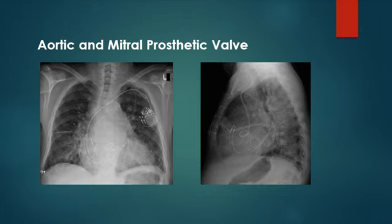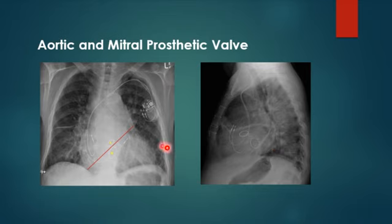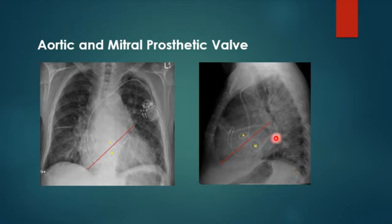For example, this 35-year-old male with a history of rheumatic fever — one of the most common causes of valve disease — has two prosthetic valves visible. Drawing a line from the left atrial appendage to the right cardiophrenic recess: the valve above directed toward the aorta is the aortic prosthetic valve, and the one below directed toward the apex is the mitral prosthetic valve. Confirmed on the lateral view by drawing a line from the carina toward the apex.